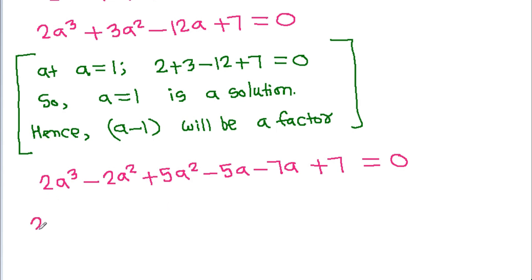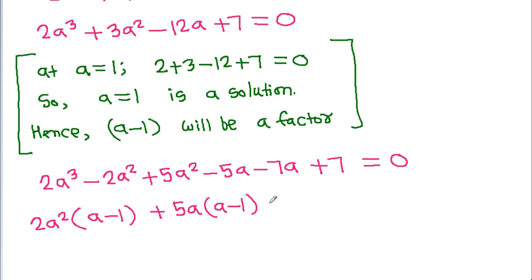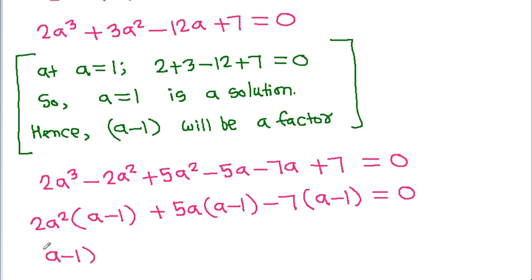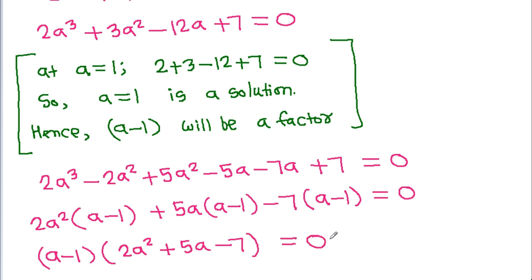Grouping the terms: 2a squared times (a minus 1), plus 5a times (a minus 1), minus 7 times (a minus 1), equals 0. Taking (a minus 1) common gives (a minus 1) times (2a squared minus 5a minus 7) equals 0.